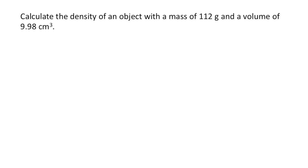I'll use red to highlight what the question is asking me to solve for. It says calculate the density. I also like to write in the symbol from the equation so I can keep track of everything. So D is for density. Next, I'm going to use green to highlight the given information. A mass of 112 grams, the symbol for mass is M, and a volume of 9.98 centimeters cubed. The symbol for volume is V.